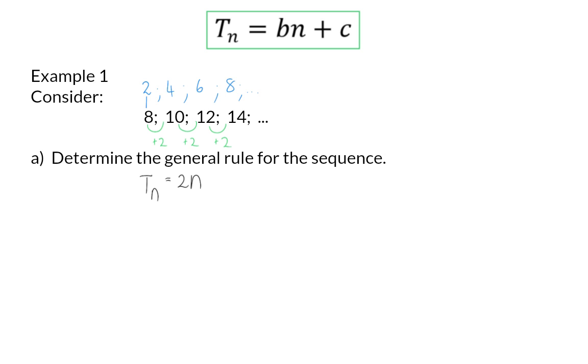We need to determine what should be added to every single one of these values to get the actual row that we are working with. And here it is clear to see that we still need to add 6 every time to get the correct row. Here we now have our general rule.